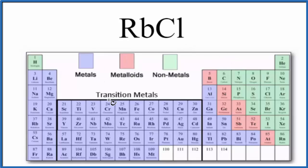We can look on the periodic table here, we can find rubidium right here. Here's rubidium, that's a metal, and then chlorine right here, that's a non-metal. When we have a metal and a non-metal, in general, we have an ionic compound.